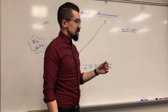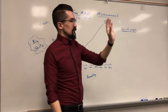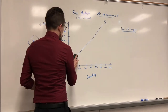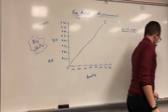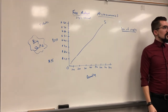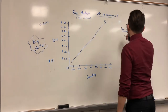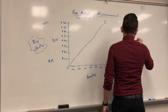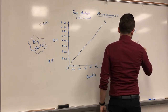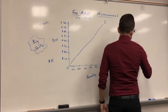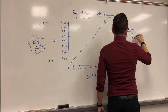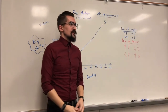Every time I see a supply graph, it'll look that way — it'll be labeled with an S, and if there are multiple, it'll be S1, S2. It always goes from the bottom left to the upper right. Now, what does my law of demand say? Price goes up, demand goes down. So a demand curve is going to go the opposite direction — from the upper left to the lower right.